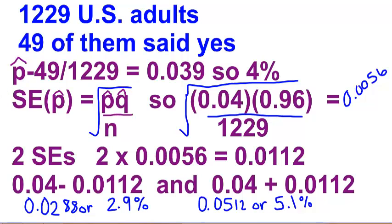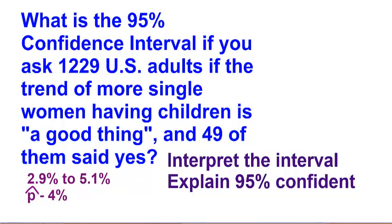The question asks us to interpret the interval: we are 95% confident that if we were to ask all Americans what they think about the trend of more single women having kids, between 2.9% and 5.1% would say it is a good thing. To explain 95% confidence: if we were to collect many random samples of 1,229 Americans, about 95% of the confidence intervals we construct would contain the proportion of all Americans who would say that the trend of more single women having kids is a good thing. Thank you for watching this video — I hope it helps you understand interpreting confidence intervals just a little bit better.